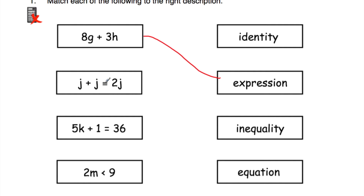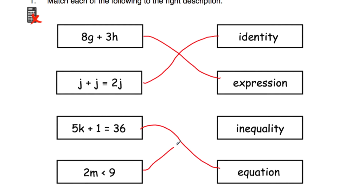Next, j plus j is equivalent to 2j — well j plus j is always equal to 2j, so that's an identity. Next, 5k plus 1 is equal to 36 — that's an equation. From solving equations, you'd take one away from both sides to get 5k equals 35, divide by 5 to get k equals 7, so there's a particular value for k. And finally, 2m is less than 9 — that's an inequality because of the less than sign.